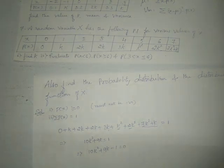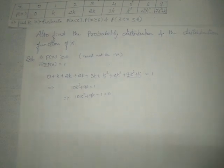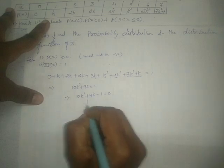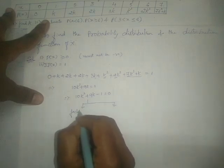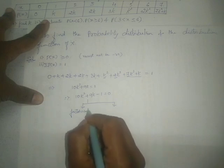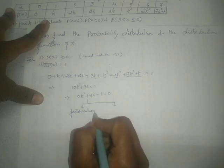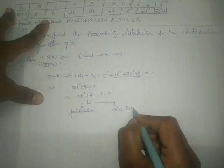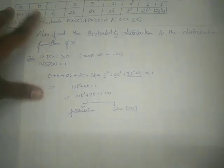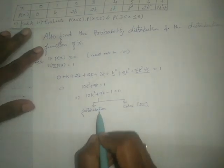Writing it in quadratic equation form: 10K squared plus 9K minus 1 equals 0. We can solve this quadratic equation by two methods — by factorization, or by using a scientific calculator. Let me first show you by factorization.